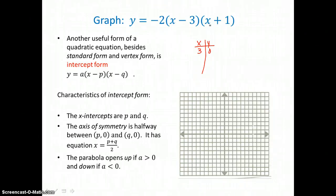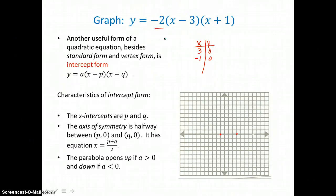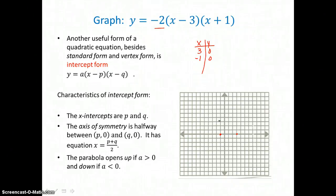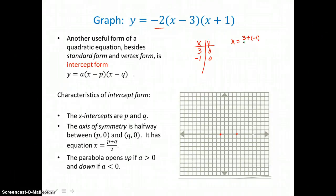Negative 1 is subtracted from x — I want to think of this quantity as x minus negative 1. My q value is negative 1. So graphing (3, 0) and (−1, 0), I know that my parabola is going to travel through those x-intercepts. The equation has an a value of negative 2, which tells me this parabola is going to be opening down. Now I need to locate the vertex above these x-intercepts. The x-coordinate of the vertex is halfway between those x-intercepts, so I take the average of p and q: I add 3 and negative 1, and divide by 2.